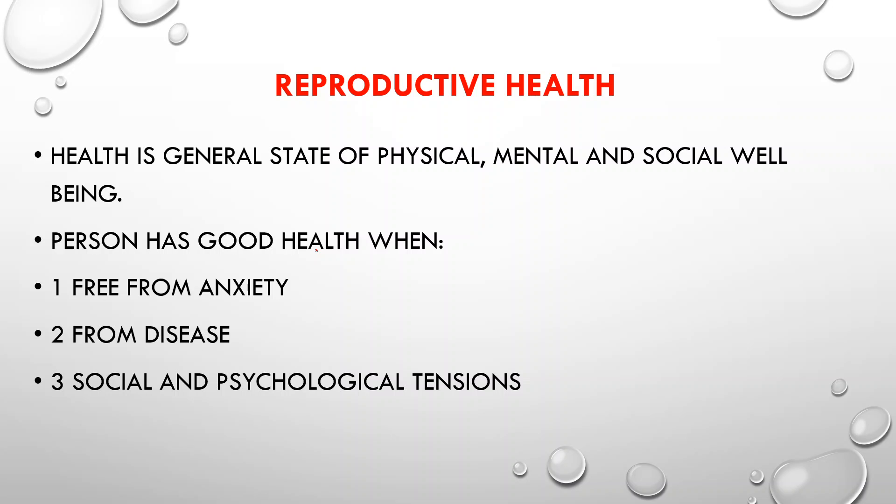Now let's discuss some important review questions. First: how many chromosomes are there in a human cell? There are 23 pairs — 22 pairs are autosomes and the last pair is the sex chromosome. Second: which type of zygote will develop into a male baby? Third: name the hormone that controls the process of metamorphosis in a frog. The answer is thyroxine, secreted by the thyroid gland.